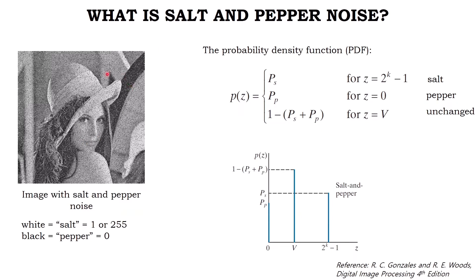This image is corrupted with salt and pepper noise. As you can see, there are white and black dots on the image. The white dot is a salt noise and it has a pixel value equal to 1 or 255 in an 8-bit image. The black dot is the pepper noise and it has a pixel value equal to zero.